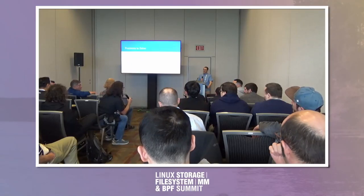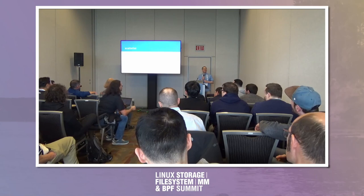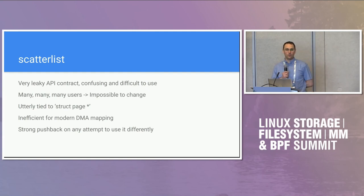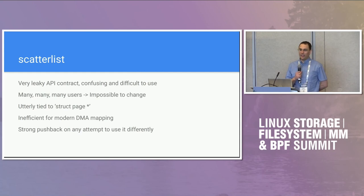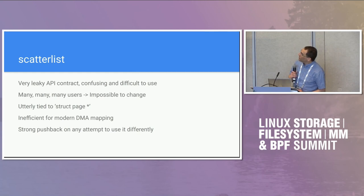If I can channel Christoph and add number six: cleanliness. Christoph really, really hates the scatter list. I think we all hate the scatter list. But the problem with scatter list is that it's absolutely everywhere, and every leaky abstraction it has has been abused and misused somewhere. Logan tried to tackle some of this very narrowly and it was hopeless — there are just too many drivers. Any hope of doing something better in scatter list is gone. I think it's a write-off.